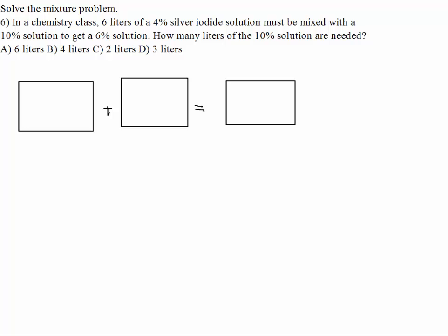So in this example, again, we can set up this chart. Let's label these. This would be 4% solution here. And this one would be the 10% solution here. And ultimately, when we mix this together, you want to get 6% solution. We know that we're going to use 6 liters for 4%. We don't know how much we need to use for 10%. So I'm going to call it N. So the total amount here would be 6 plus N.